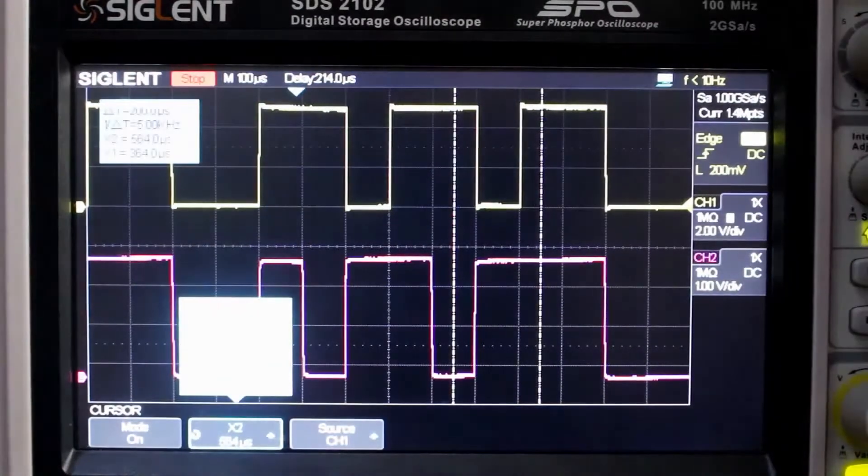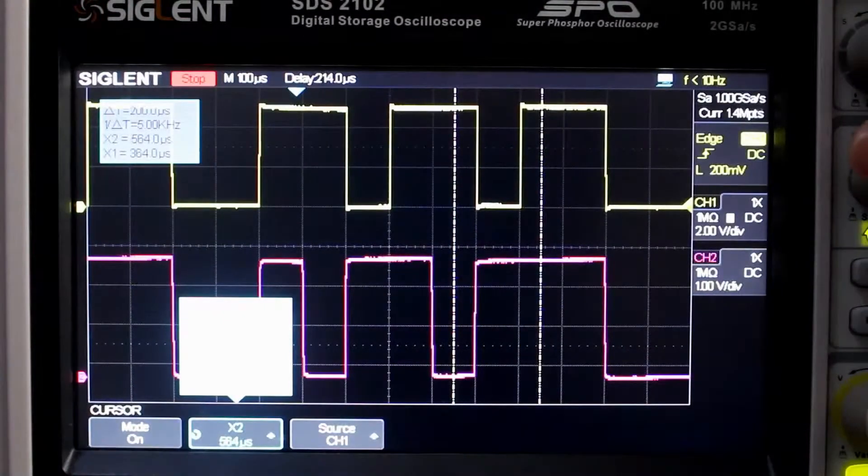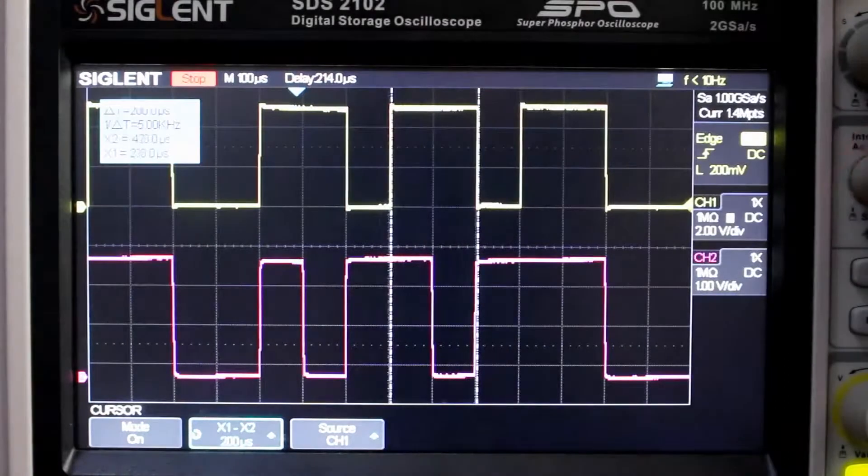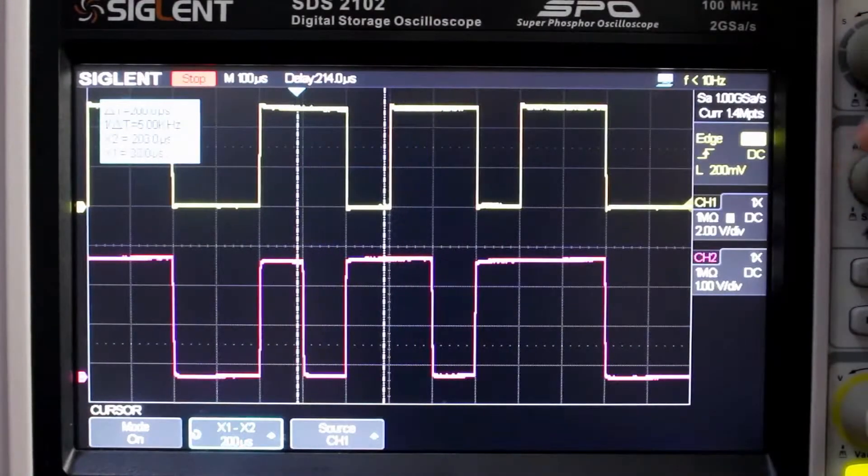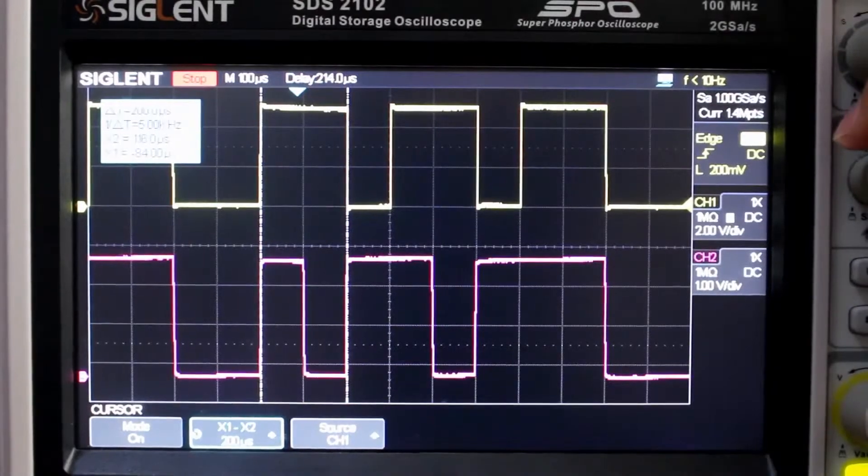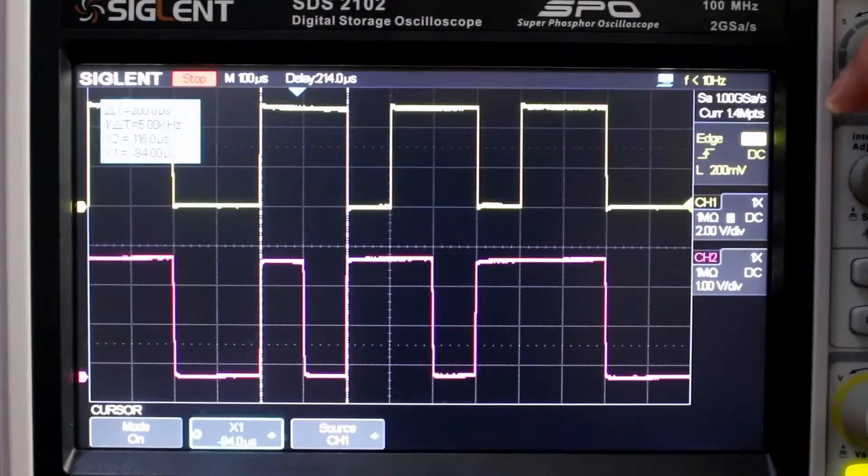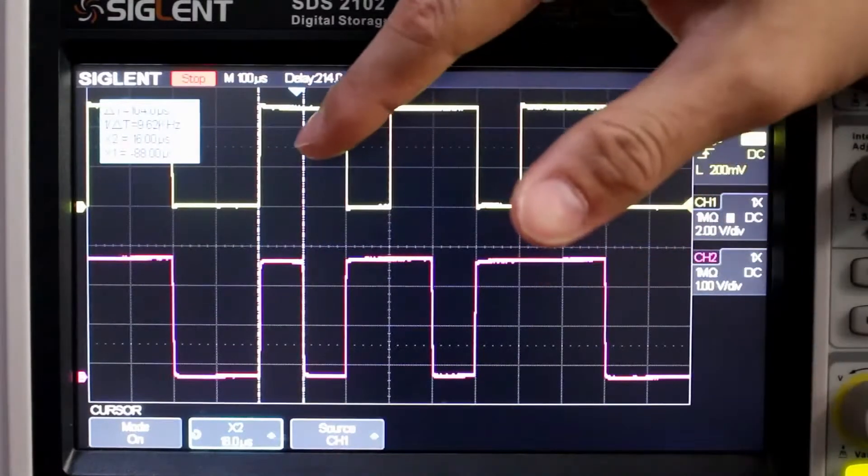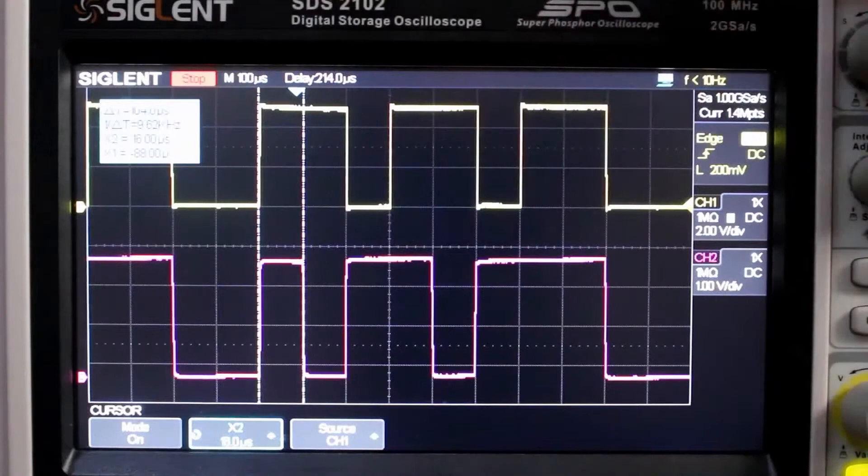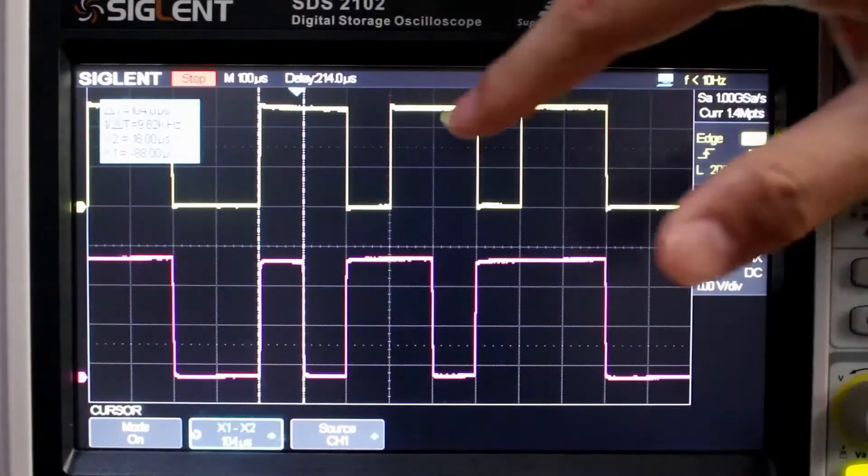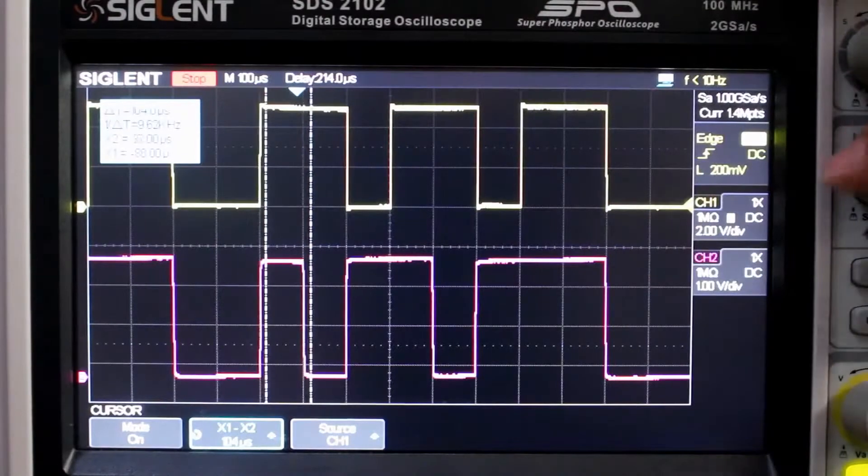So let's adjust our cursor and measure the width of these. Let's slide it over here and measure the first true result. Okay, so that looks like it's about 100, 104, somewhere around 100 sounds good.